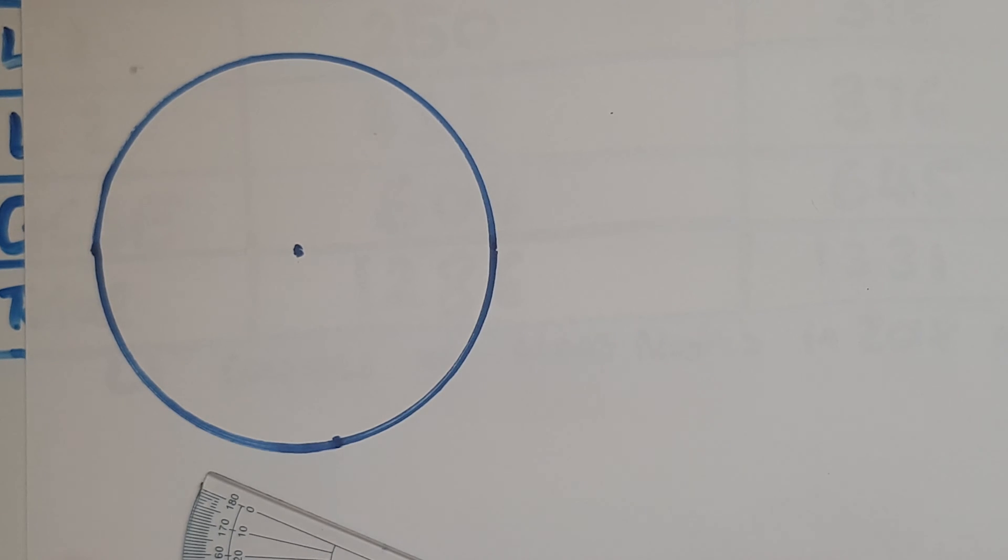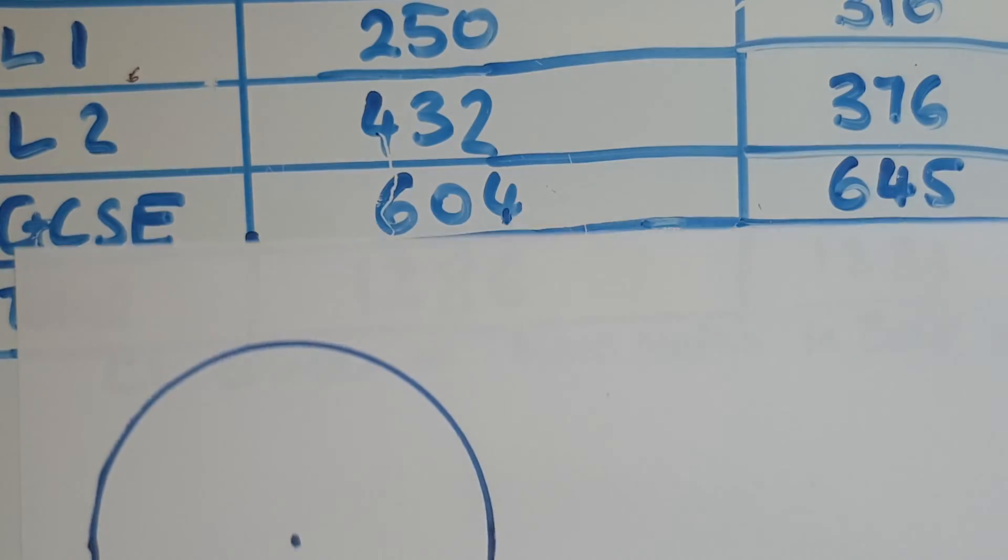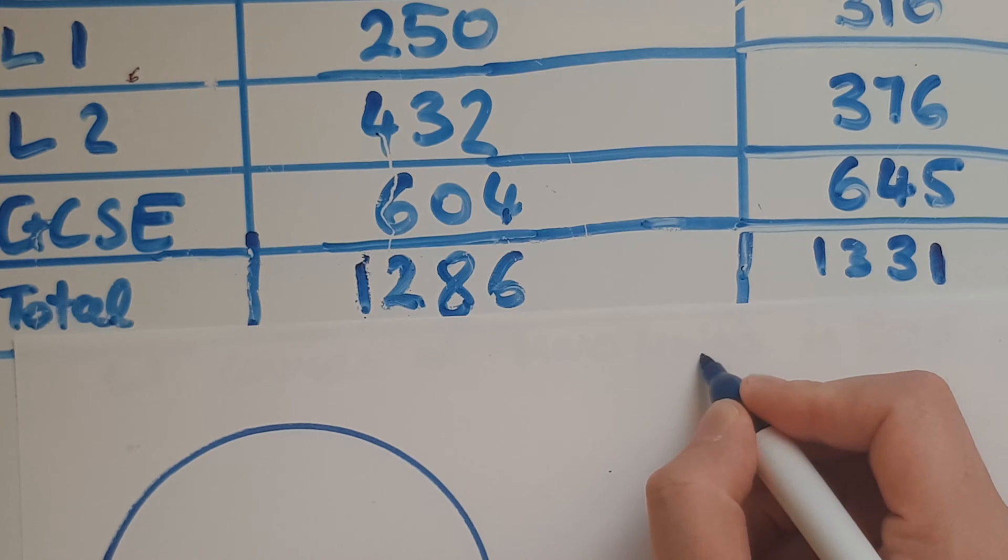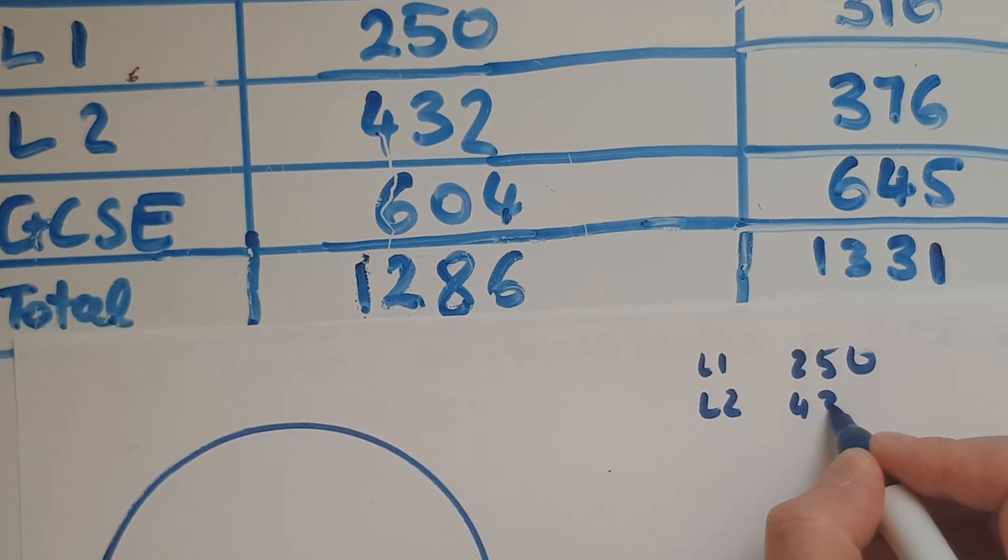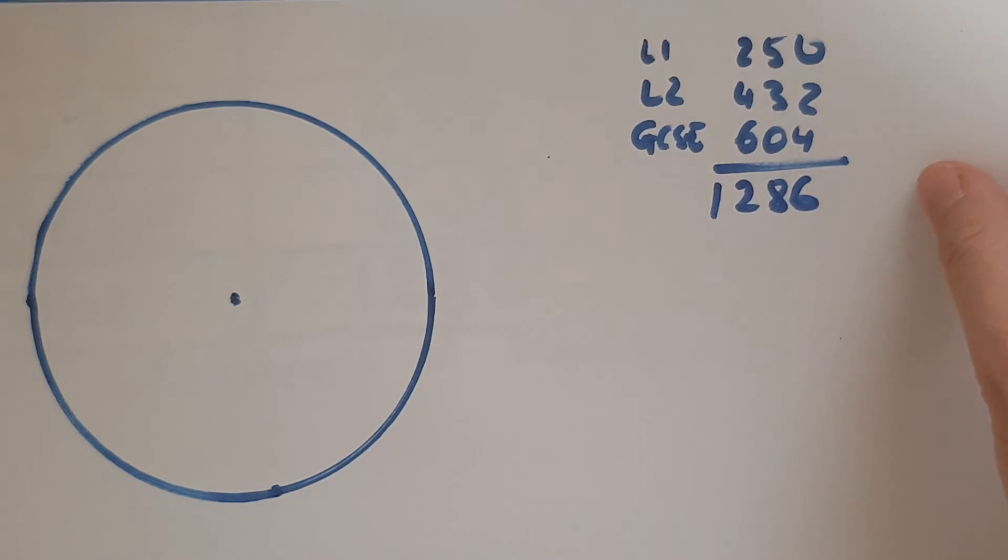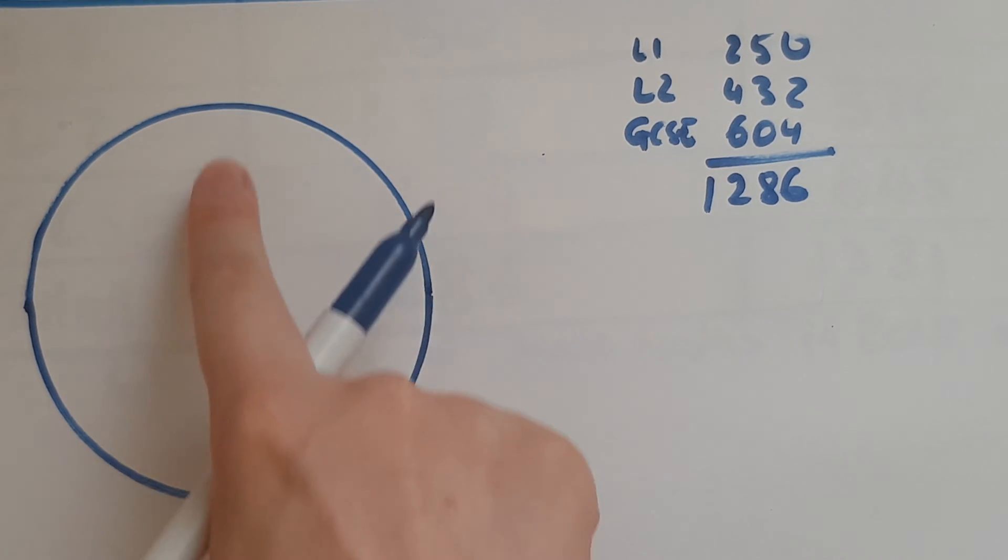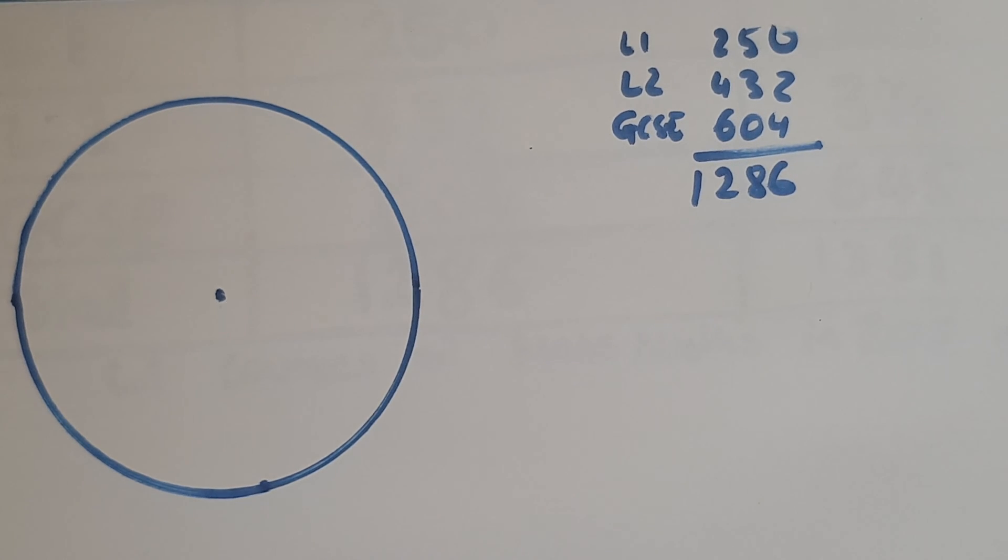So what I'm going to represent is the number of learners doing level one, level two and GCSE in year 2018. So it is this column that I'm looking at. So we've got level one 250, level two 432 and GCSE 604. That's out of the total which is 1,286 because we're going to need that to work out how many degrees will each of these slices or sectors be represented by.